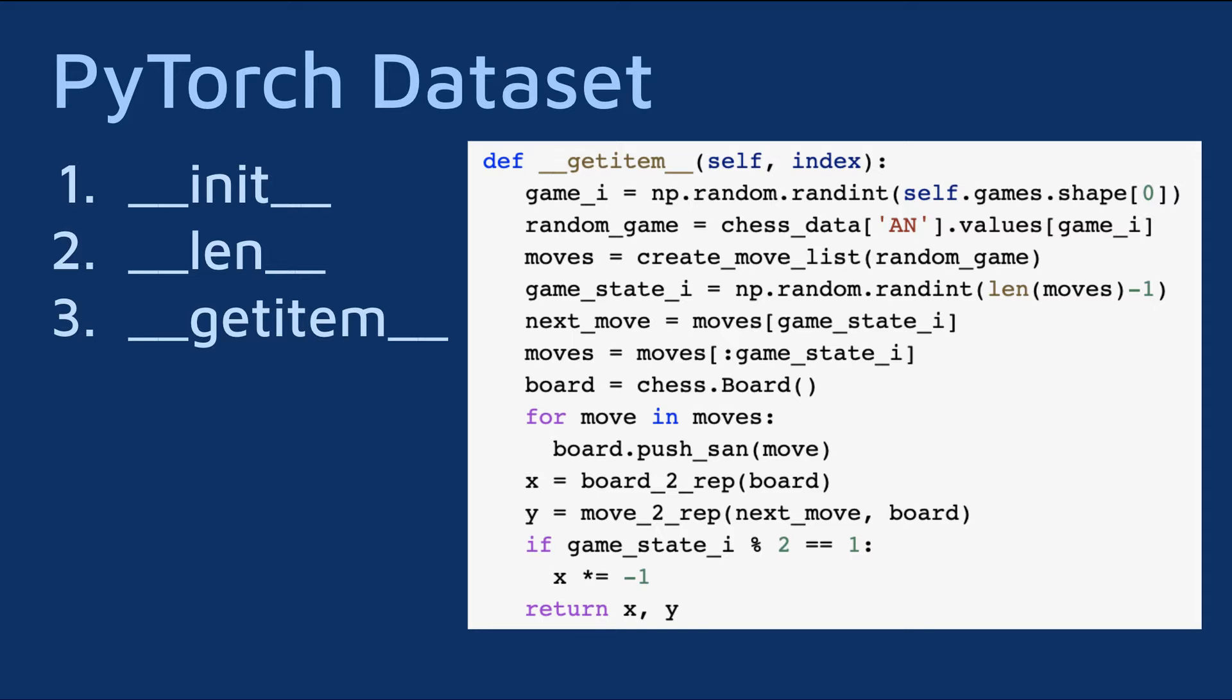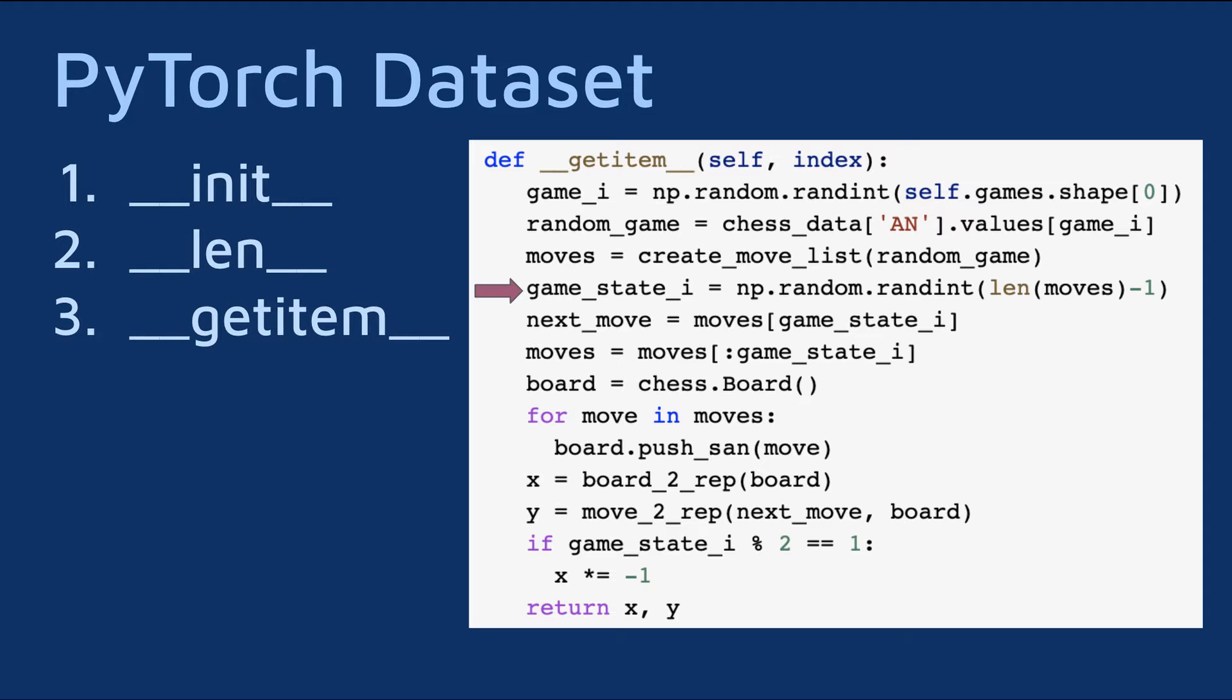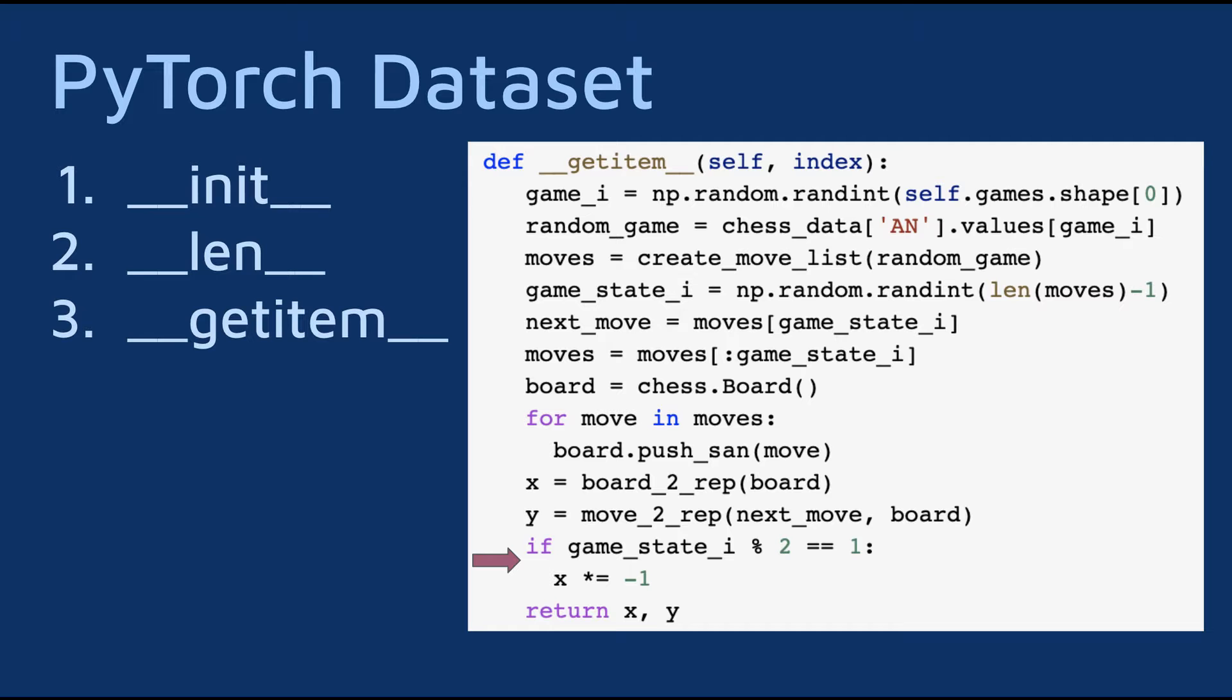Let's start with the getItem function. Since finding the exact move at a given index would require looping through all 800K games and counting the number of moves in each one, I decided to take a different approach. Instead I pick a random game each time and then pick a random move from that game. This way I don't have to keep track of all of the numbers of moves in each game, which makes the code a lot simpler and the dataset loading time much quicker. We use the functions we discussed earlier to convert the board state and the next move into their matrix representations. There is just one subtlety to address. If the move index is even, which means it's Black's turn to play, I multiply the board matrix by minus 1. This way the CNN always knows that it needs to play the pieces that are represented by positive values.